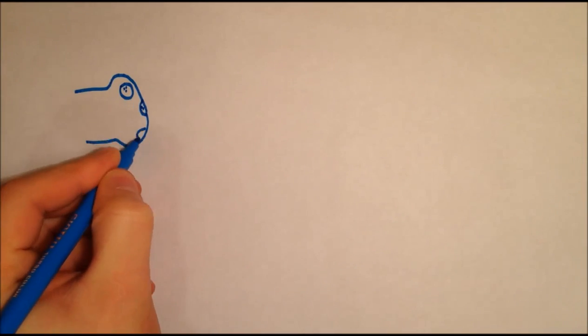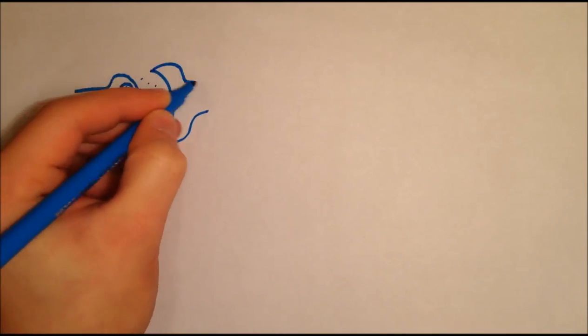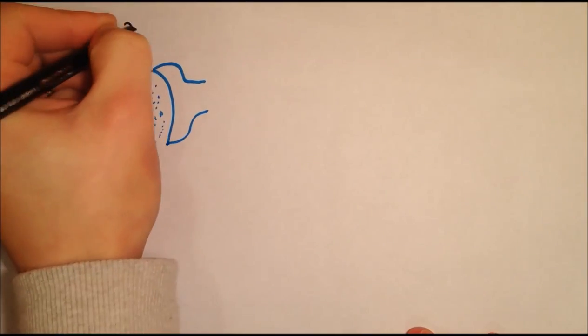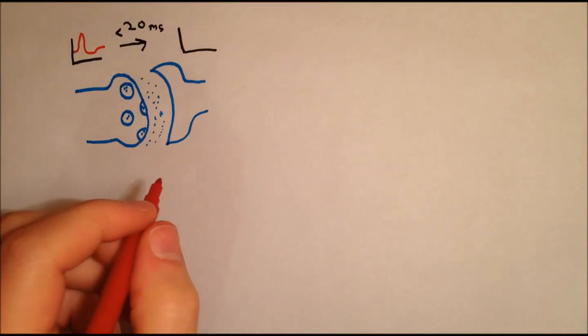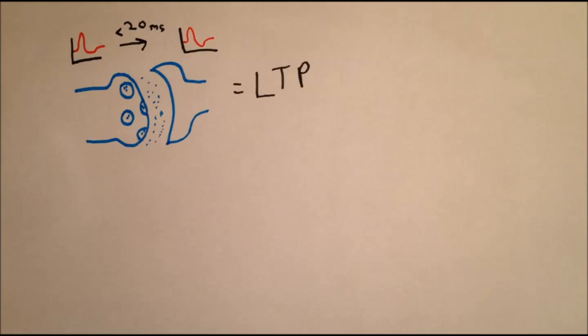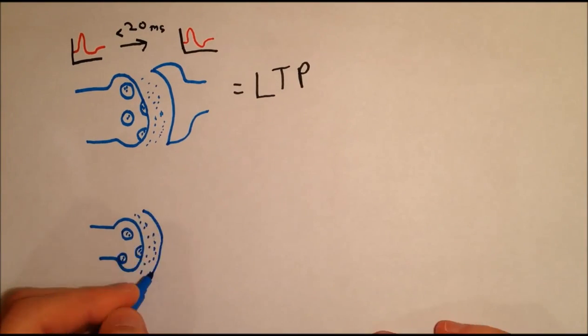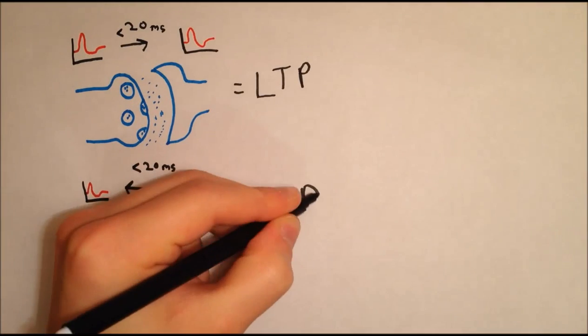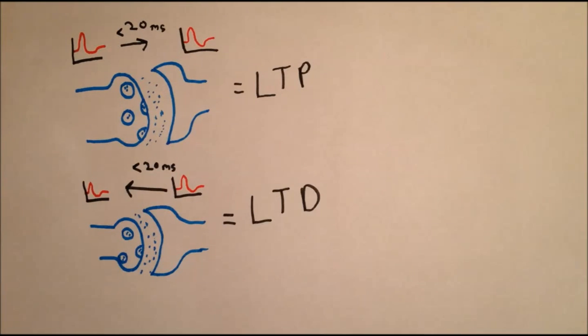It's all a matter of timing. There is a critical window for synaptic plasticity, with the peak time for changes to synaptic strength being in the 20ms before and after an action potential. If the presynaptic neuron fires before the postsynaptic neuron, within the preceding 20ms, long-term potentiation occurs. And if the presynaptic neuron fires after the postsynaptic neuron, within the following 20ms, long-term depression occurs.